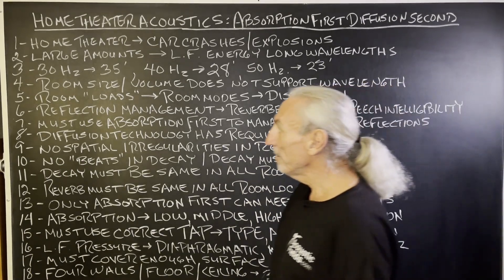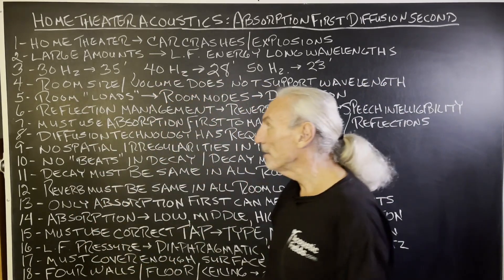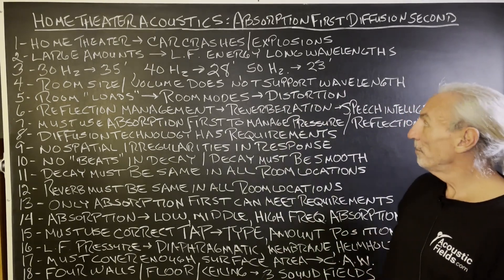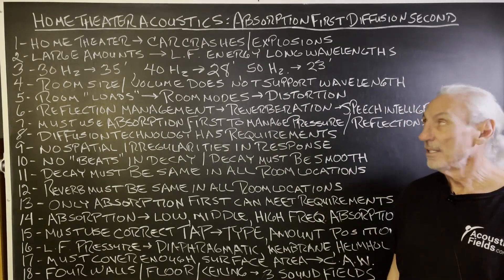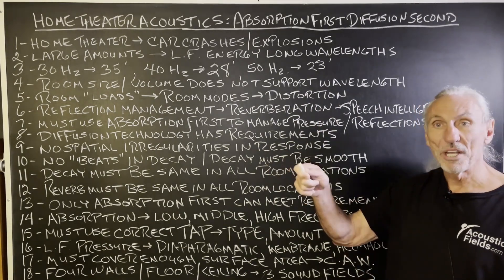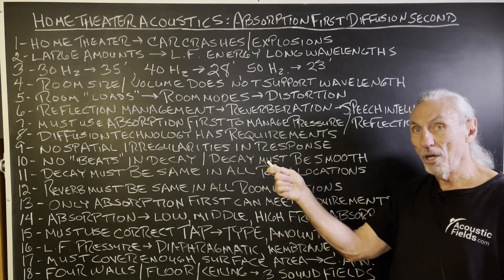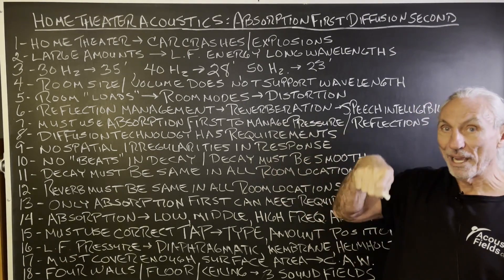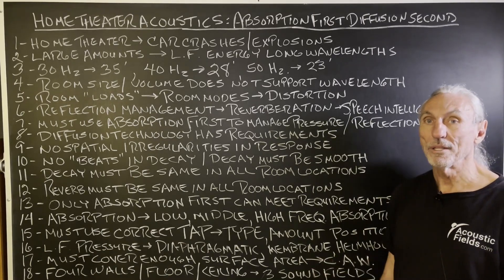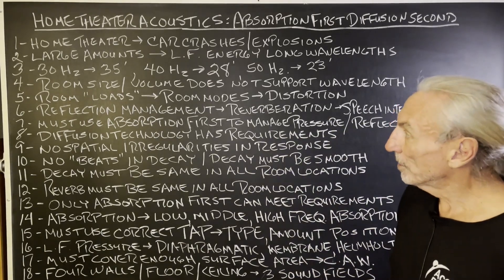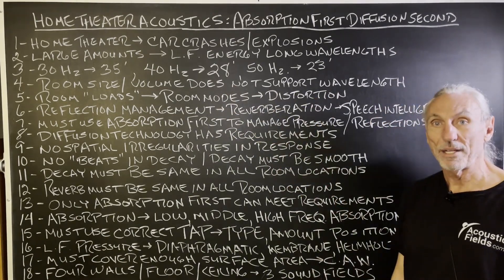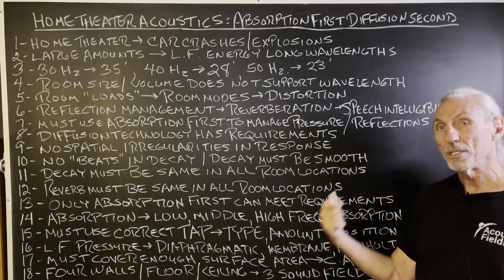Let's look at some of the wavelength lengths. 30 hertz is 35 feet, 40 hertz is 28 feet, 50 hertz is 23 feet. Who's got rooms that long? Most people don't. Low frequency energy goes through the wall, reflects back into the room, or is absorbed — those are the three things that happen. Room size and volume does not support most of these low frequency wavelengths.